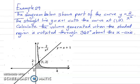Example 29. The diagram below shows part of the curve y = 2/x². The straight line y = x + 1 cuts the curve at (1, 2). Calculate the volume generated when the shaded region is rotated through 360 degrees about the x-axis.